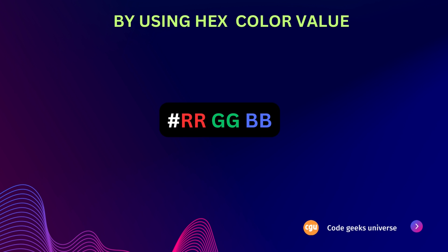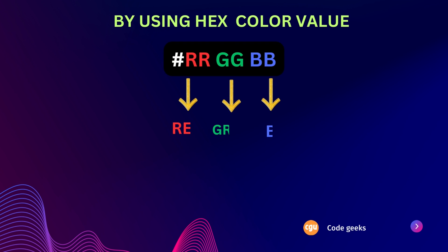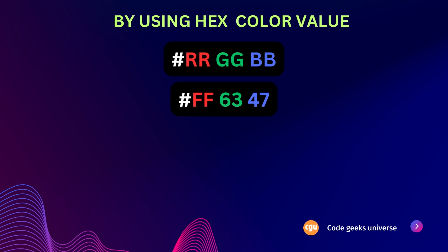The third way of specifying color is using hex values. When specifying a hexadecimal color, we use the format #rrggbb, where rr, gg, and bb represent the red, green, and blue components of the color. Each component is expressed in hexadecimal format and can have a value ranging from 00 to ff, which is equivalent to the decimal range of 0 to 255.